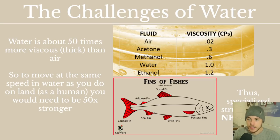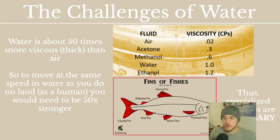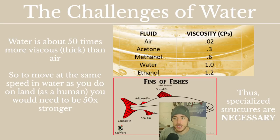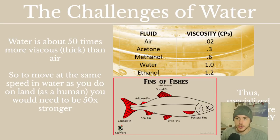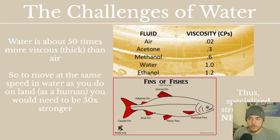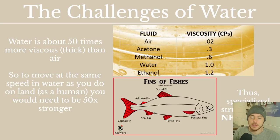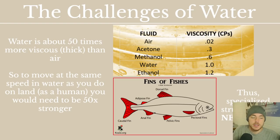Because of this, fish are going to have specialized structures. Specialized structures are fins, scales, and various other adaptations that allow them to move through this highly viscous water. There are lots of different ways to go about that, but that is basically why specialized structures are necessary — because it is difficult to move through water, more so than through air.